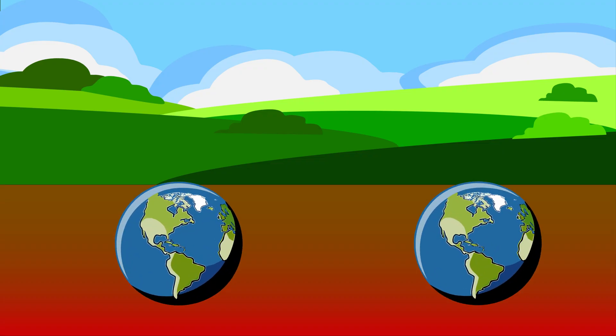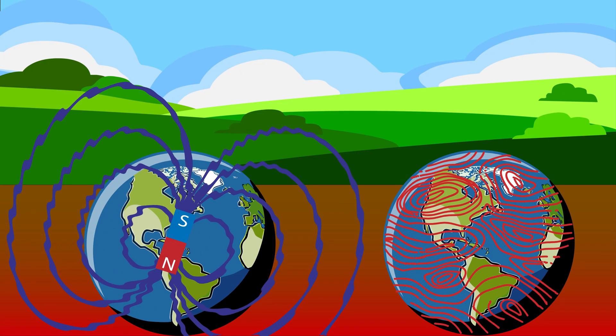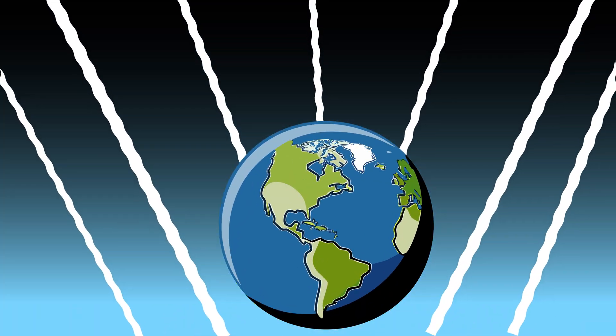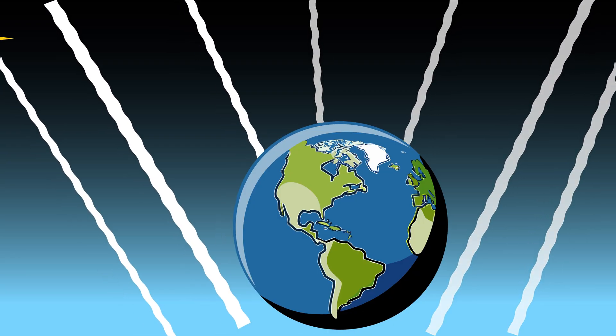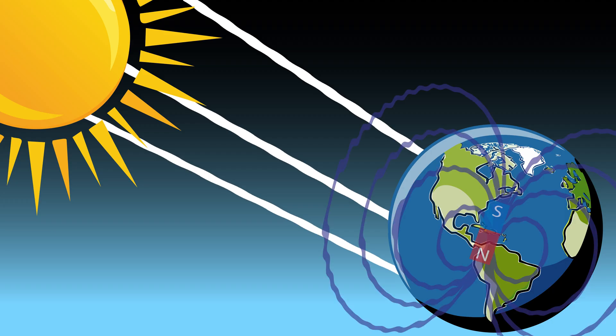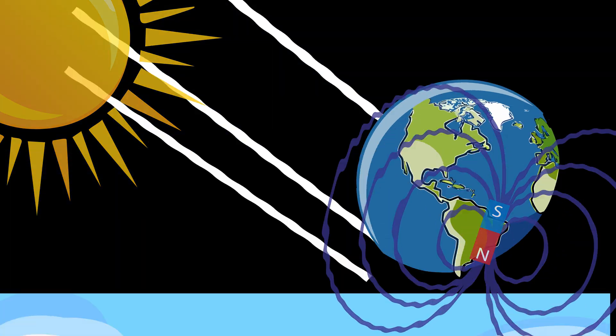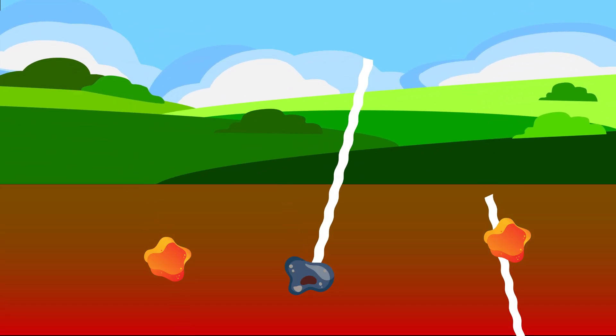We can also use the Earth's natural electricity and magnetism to learn what's underground, using a method called magnetotellurics. The Earth is constantly being whispered to by natural signals, tiny electric and magnetic waves. These come from things like solar wind, which is energy from the sun that hits the Earth's magnetic field, and from lightning, which creates bursts of electric and magnetic energy. These signals travel through the ground and interact with underground materials in different ways.